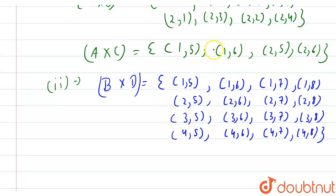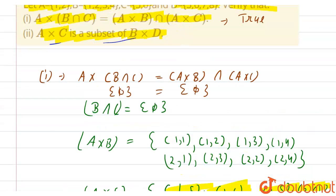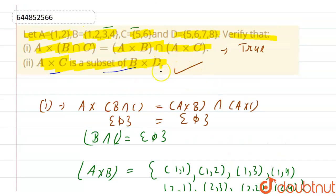To verify A×C ⊆ B×D, all elements of A×C must appear in B×D. Checking: (1,5) is in B×D, (1,6) is in B×D, (2,5) is in B×D, and (2,6) is in B×D. All elements match, so the second statement is also true. Both given parts are verified.